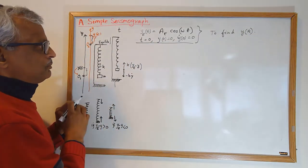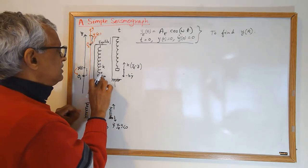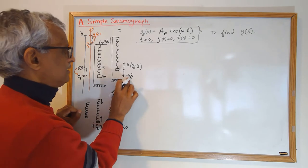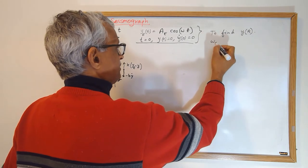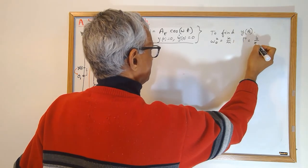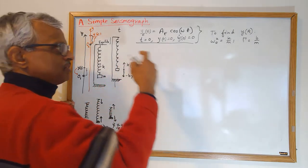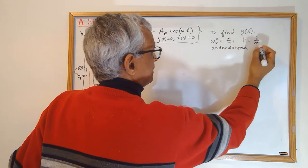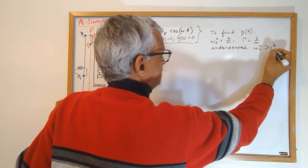We don't want a completely general solution — we want to make it a bit more particular. The mass of the block is m, the spring constant is k, and the damping parameter is b. We define ω₀² = k/m and γ = b/m, just as before. We want the spring to be in an underdamped situation, so ω₀² is greater than (γ/2)².